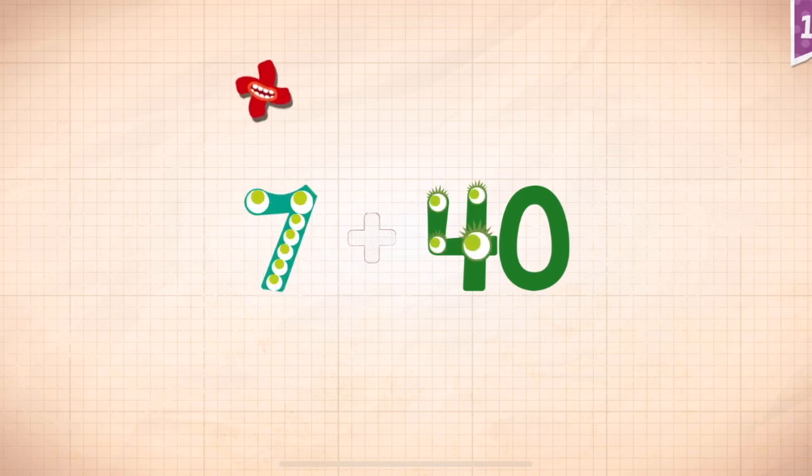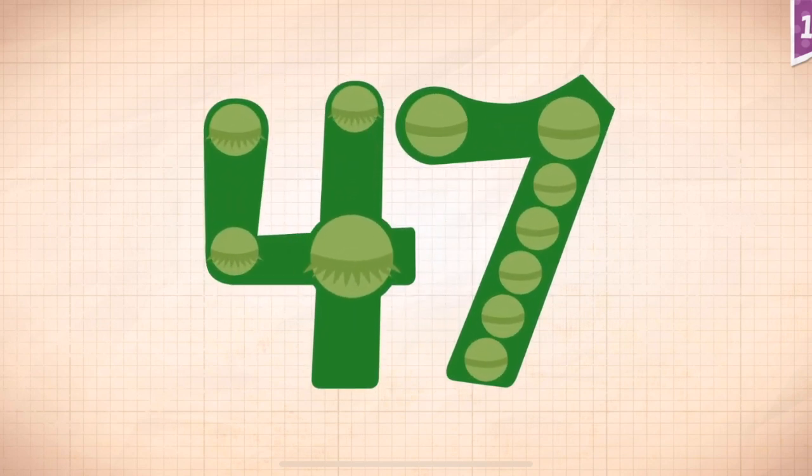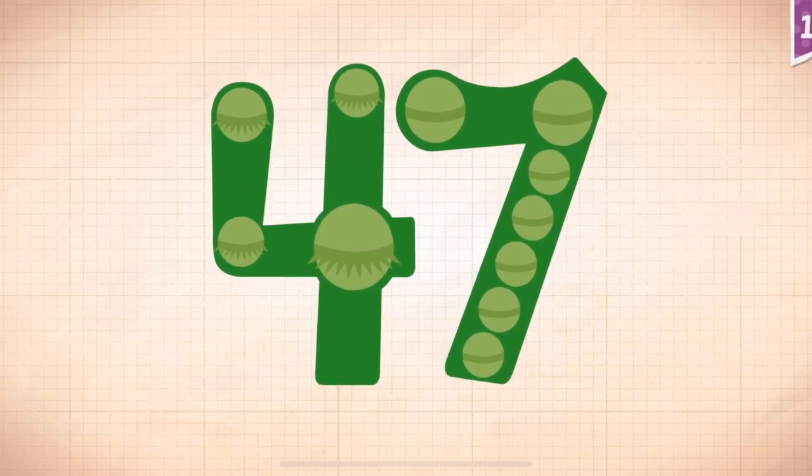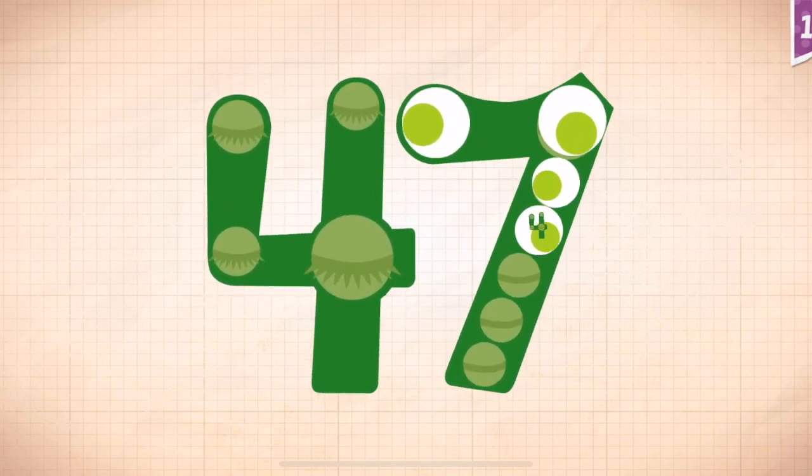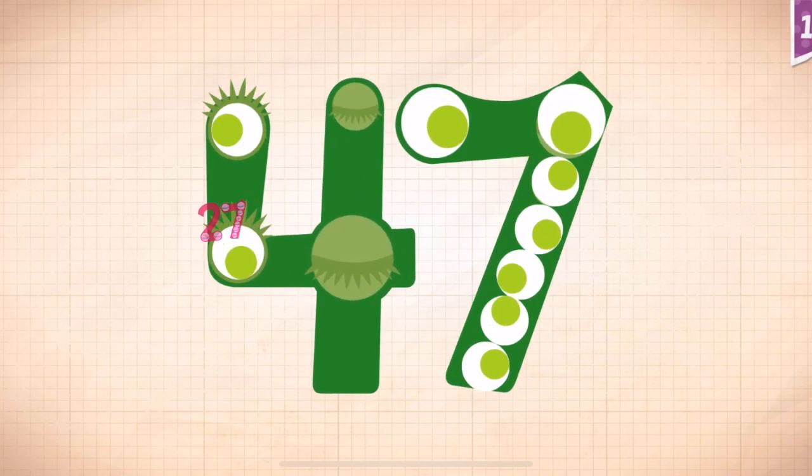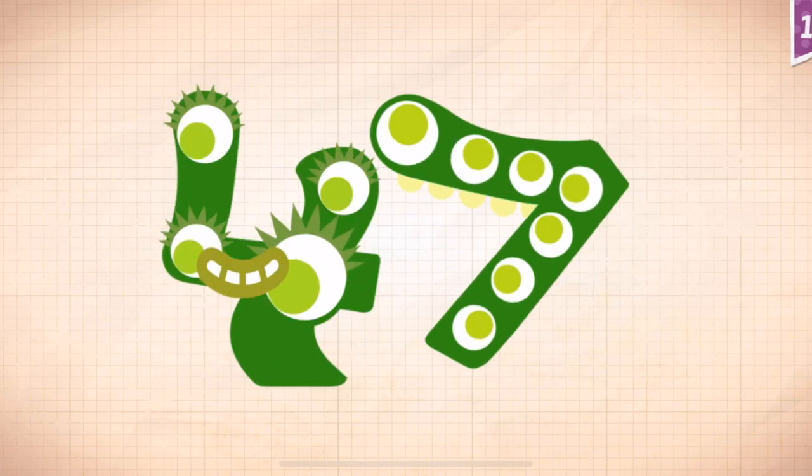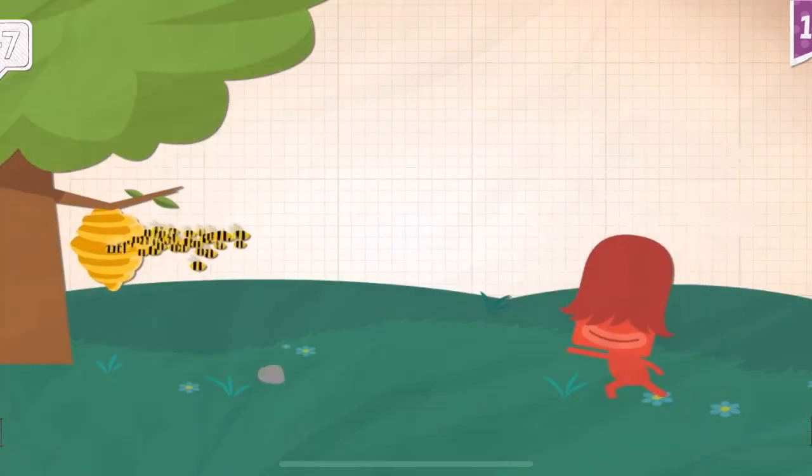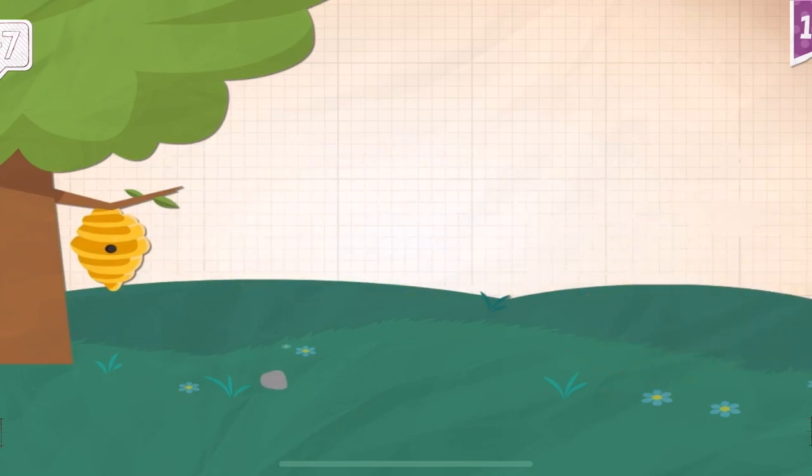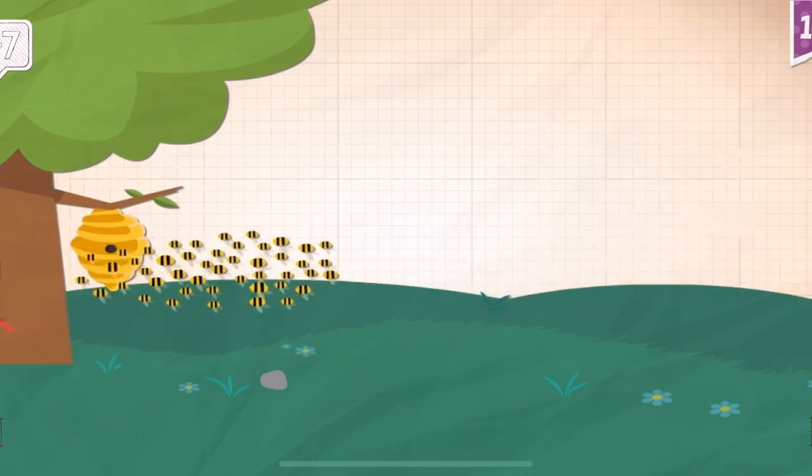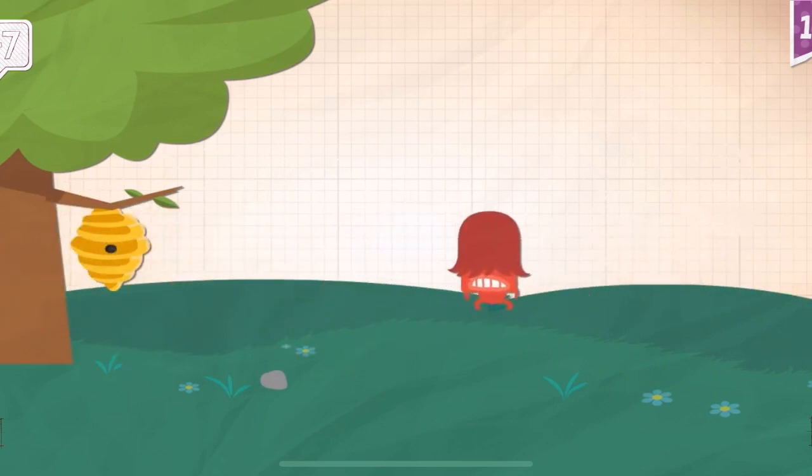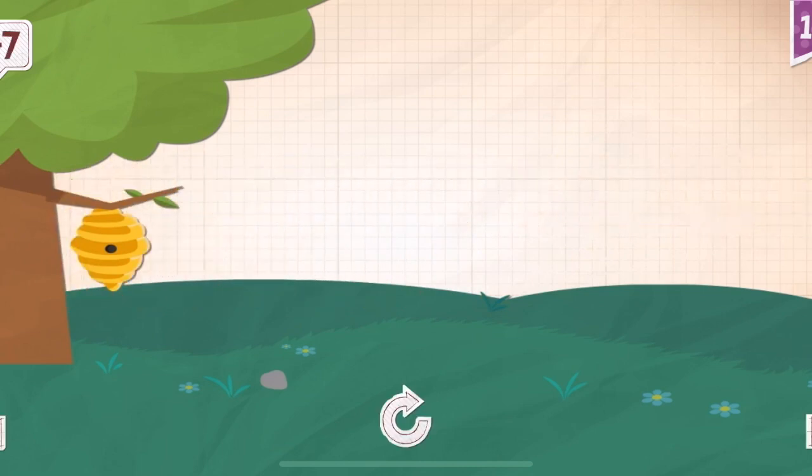7 plus 40 equals 47. Touch the monster's eyes to wake it up. 1, 2, 3, 4, 5, 6, 7, 17, 37, 47! Pinkerton upset the beehive and was chased by 47 angry bees.